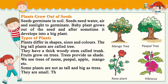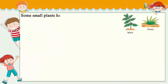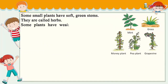Some plants are not as tall and big as trees. They are small and hard. They are called shrubs. Examples include rose plant and hibiscus. Some small plants have soft green stems. They are called herbs. Examples include grass and mint.